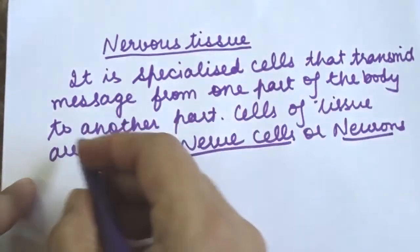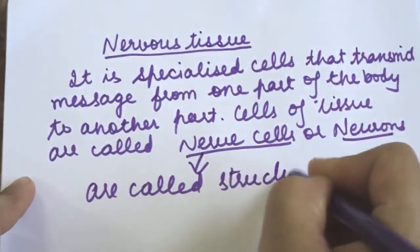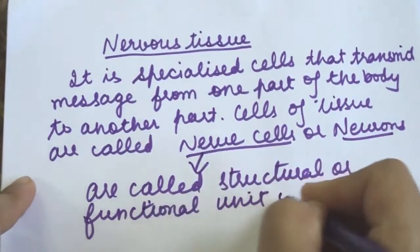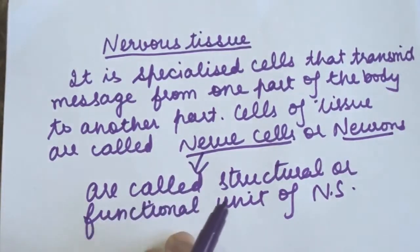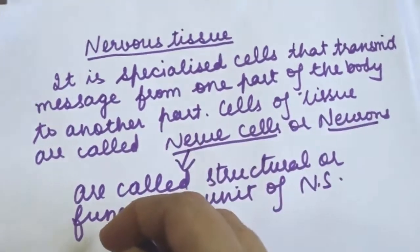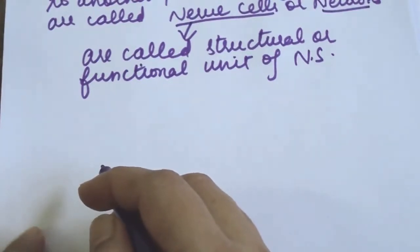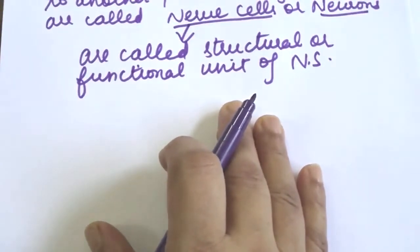Neurons are the structural and functional units of the nervous system. These neurons have the ability to receive stimulus from within or outside the body and conduct it to different body parts.